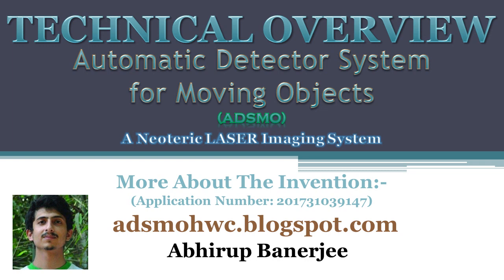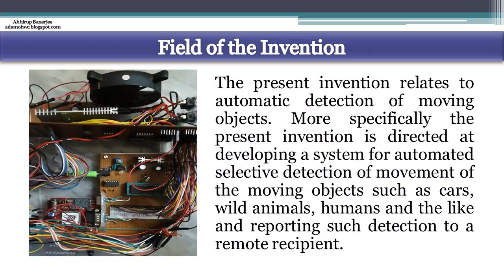Automatic Detector System for Moving Objects – A Technical Overview. The present invention relates to automatic detection of moving objects. More specifically, the present invention is directed to develop a system for automated selective detection of movement of moving objects, such as cars, wild animals, humans and the like, and reporting such detection to a remote recipient.